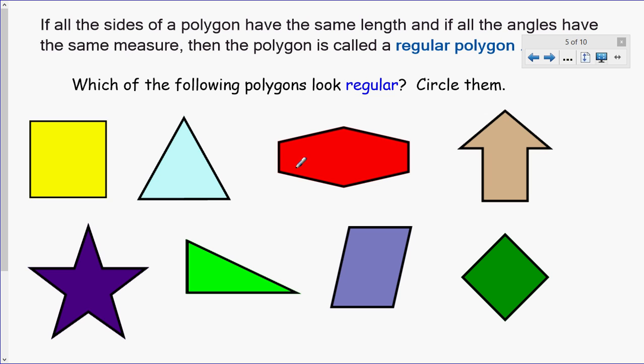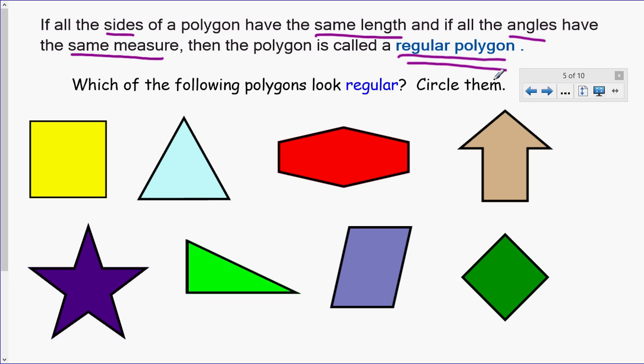Now let's learn another term here. If all the sides of a polygon have the same length and if all the angles have the same measure, we have something called a regular polygon. That's what a regular polygon is. All the sides are the same length and all the angles have the same measure. So now we have eight different polygons. Which of the following look regular to you? Circle them. Why don't you pause and try this and then we are going to look at it together.